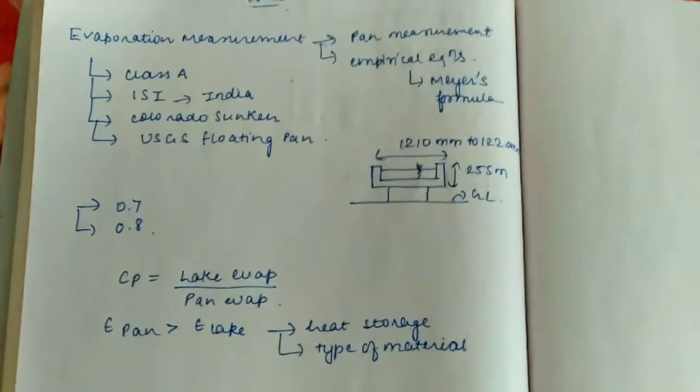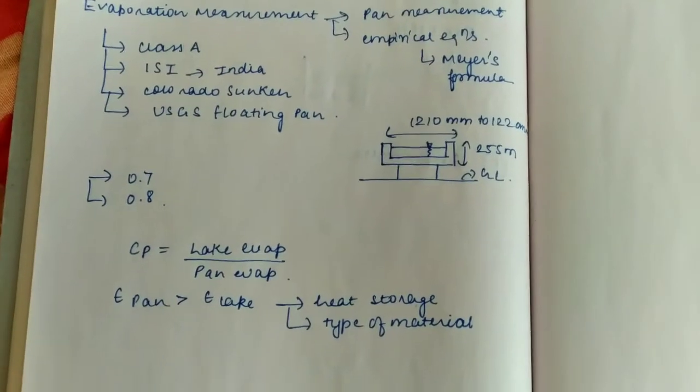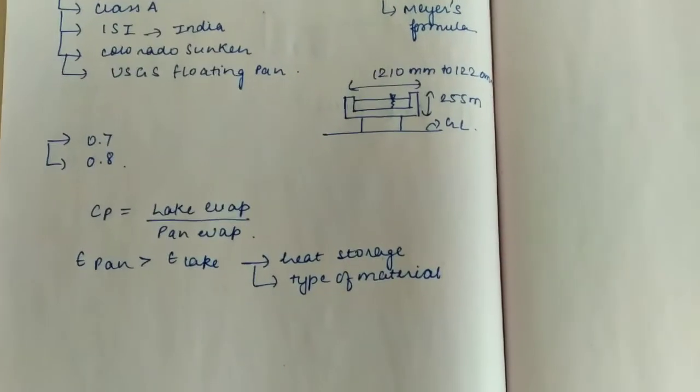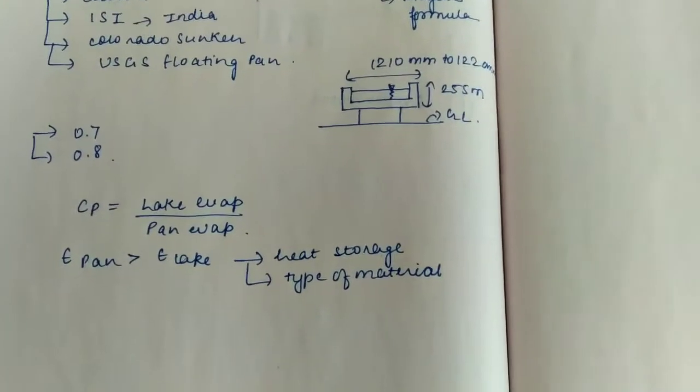We do not fill the pan up to the brim because what if some rainfall occurs in that area? We have to take that into factor so that we can see the change in the water level.